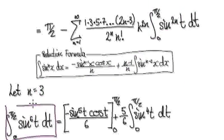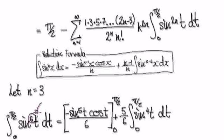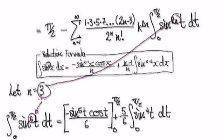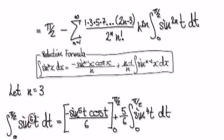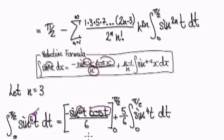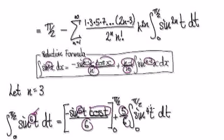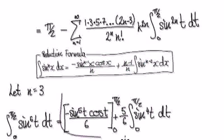Let's look at this one specific case. n is 3, but when you use the reduction formula, the exponent is 6. So let's use the reduction formula with n equal to 6. The reduction formula gives us 6 minus 1 — that's to the power of 5 — cos stays intact, divided by 6. Then 6 minus 1 over 6, and then the integral, with 6 minus 2 giving us sine to the power of 4, and so on.